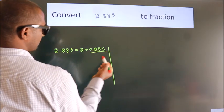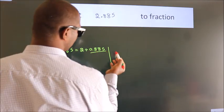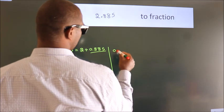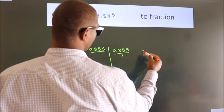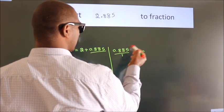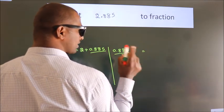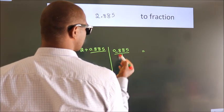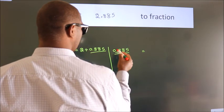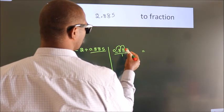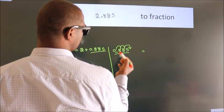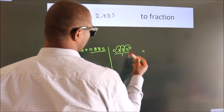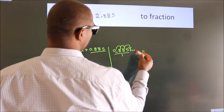Convert this to fraction. So 0.885, to convert this to fraction we have to move this decimal after 1, 2, 3 numbers. To move this decimal after 3 numbers, we have to multiply it with 1000.